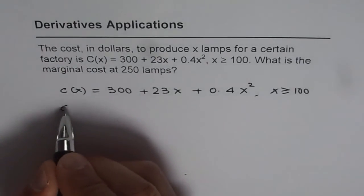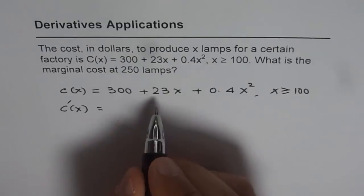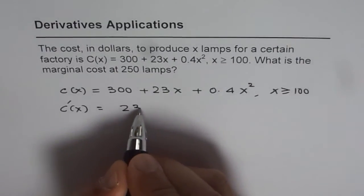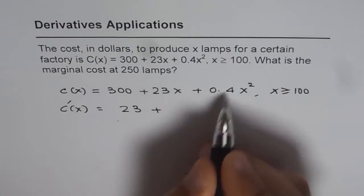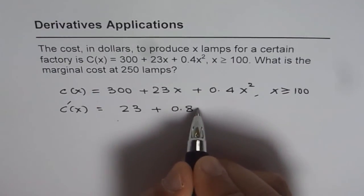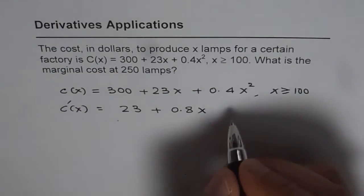Now C'(x), derivative of this function, will be: derivative of 300 is 0, we are left with 23 plus 2 times 0.4 which is 0.8x. So we are at 23 + 0.8x. This is the marginal cost.